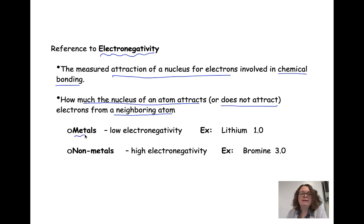Metals tend to have low electronegativity. An example of that would be lithium with a value of one. Non-metals tend to have higher electronegativities. An example here is bromine which is three. Those electronegativity values are going to be really important when it comes to how and where the electrons go in a bond between two atoms.